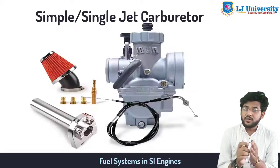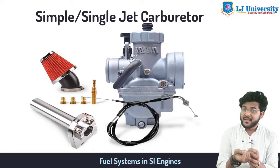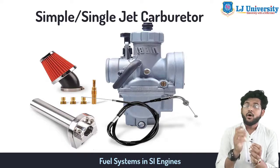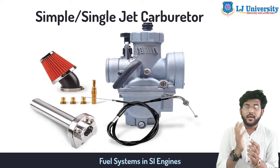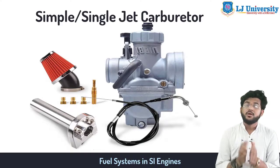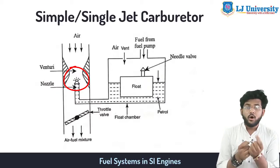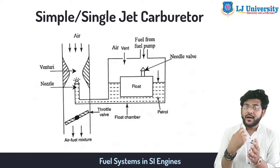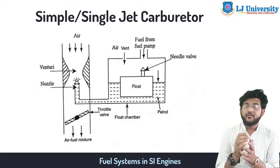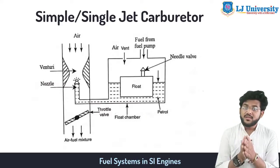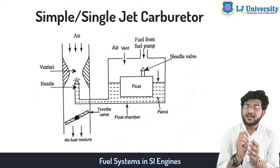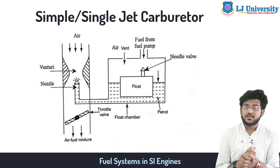The throttle is connected, usually through a cable or mechanical linkage of rods and joints, or by pneumatic links, to the accelerator pedal on a car or to the equivalent control on other vehicles. Fuel is introduced into the air stream through a small hole — called a jet — at the narrowest part of the venturi, and at other places where pressure is lowered when not running at full throttle. The fuel flow is adjusted by means of a precisely calibrated orifice referred to as a jet. This was the basic working of the single jet carburetor.